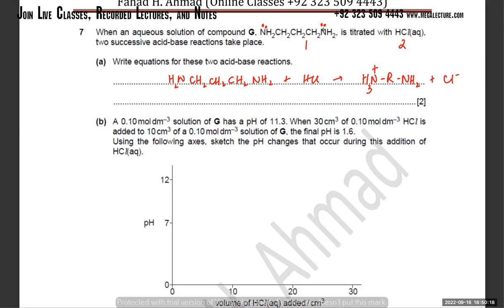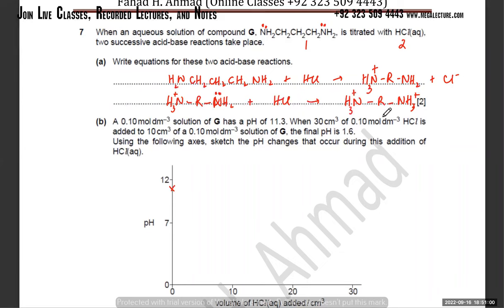There are two acid-base reactions that happen — first one, then the second one. The 0.1 mol per dm³ solution of G has a pH of 11.3, so that's my starting pH. When 30 cm³ of 0.1 mol per dm³ HCl is added to 10 cm³ of 0.1 mol per dm³ solution of G, the final pH is 1.6. He's asking us to sketch the pH changes that occur during this addition of HCl.